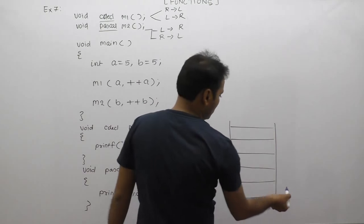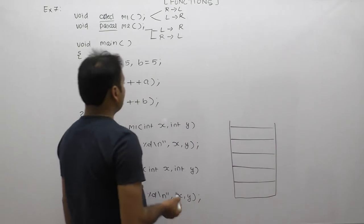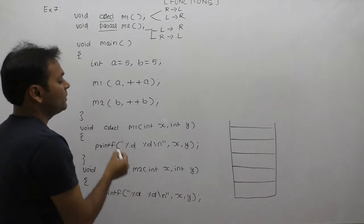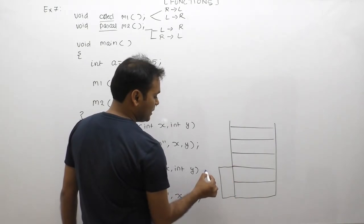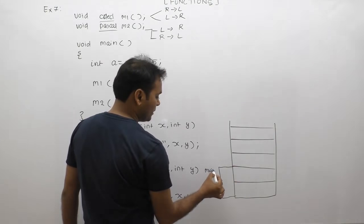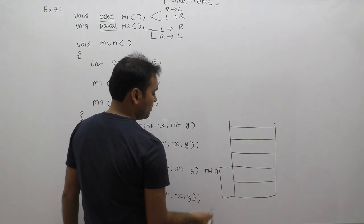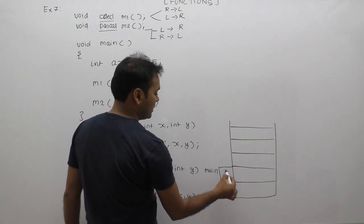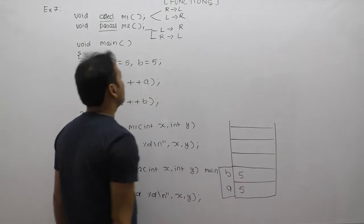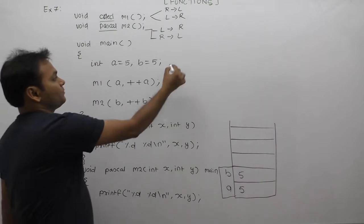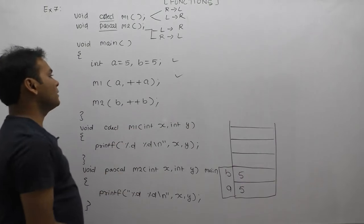First, we call the main function. With respect to the main function, two variables are created: variable a and variable b. Both are allocated with the same value, exactly 5. Next statement calls m1.